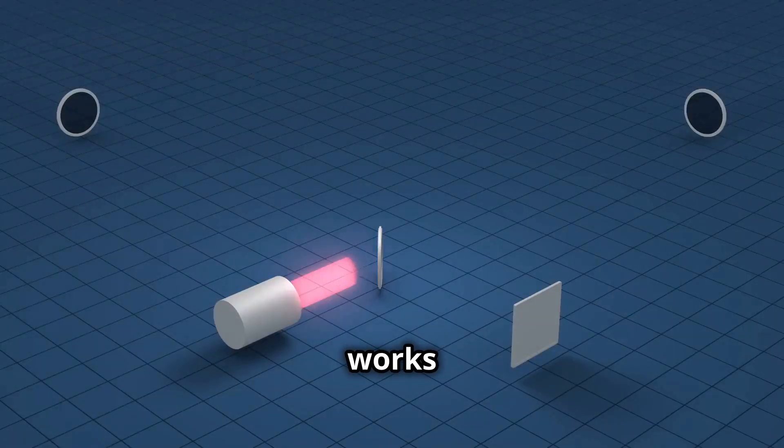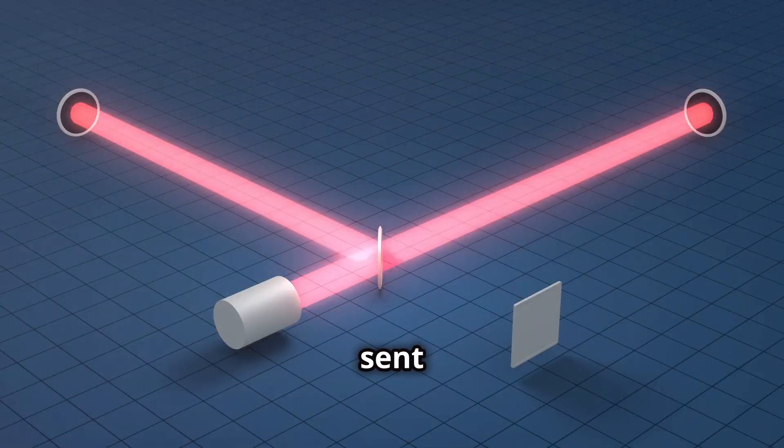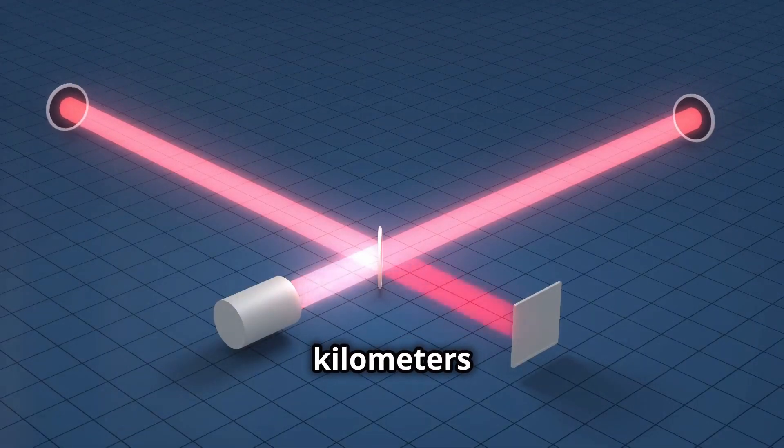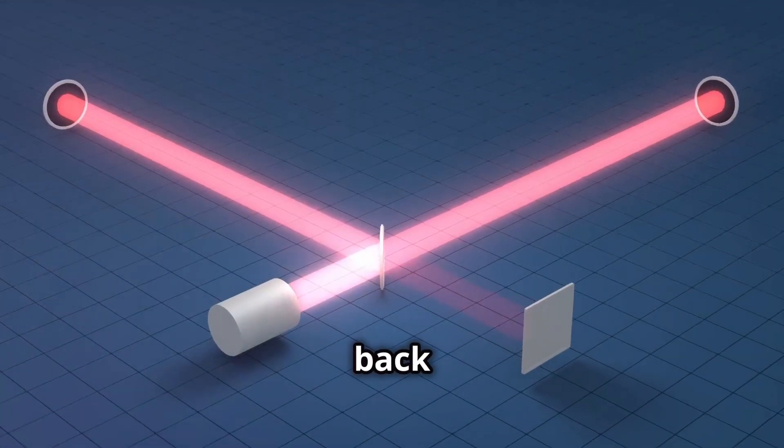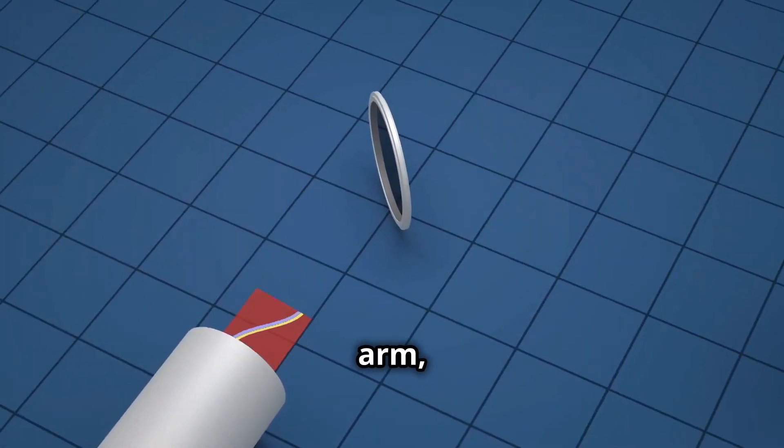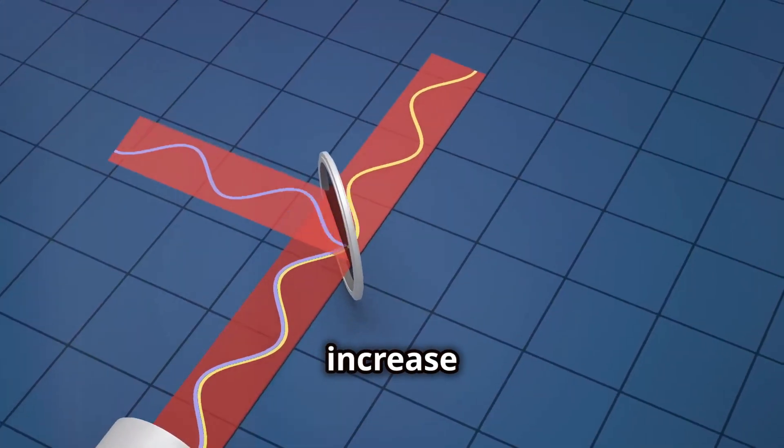Here's how it works. A laser beam is split and sent down two perpendicular arms, each several kilometers long, creating a precise measurement system. The beams are reflected back and forth by mirrors at the ends of each arm, allowing for repeated measurements to increase accuracy.